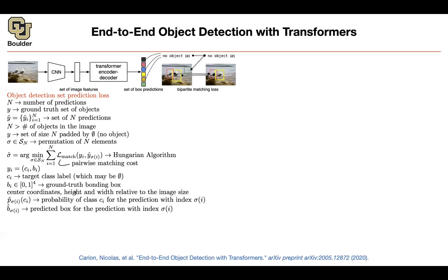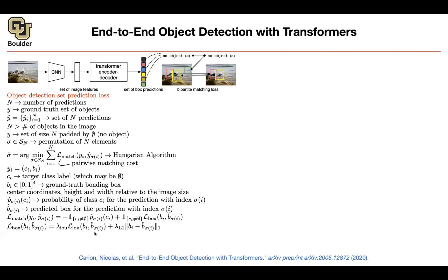You are trying to maximize the probability of the correct class by adjusting your permutation, keeping adjusting it so that you are maximizing the likelihood or probability of the correct class happening. You only do this for objects that actually exist, not for no objects. The negative sign is because we always like to minimize. And then you have a box loss which is trying to match the intersection over union — it's a weighted combination of the IoU and L1 distance between the two, with some hyperparameters to adjust.